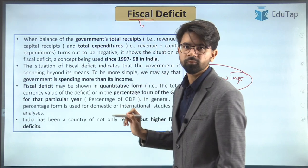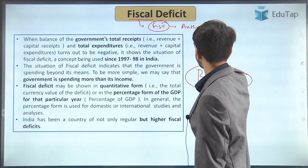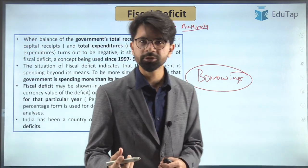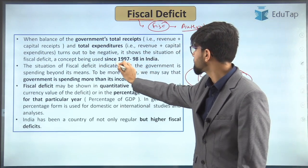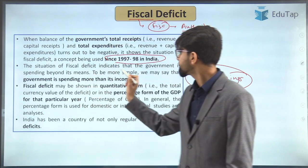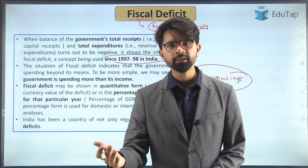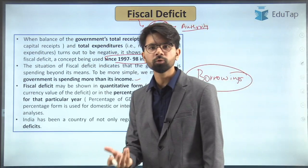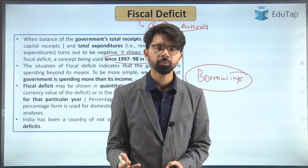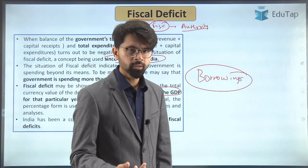The term fiscal is derived from the Greek word FISC, which means authority. So wherever you are talking about fiscal, it is associated with the central government or the state governments — the entities which possess authority. Hence the word fiscal deficit, and this term has been in use since 1997 to 98. The situation of fiscal deficit indicates that the government is spending beyond its means. Fiscal deficit is expressed as a percentage of GDP, for example 3.5% of GDP.